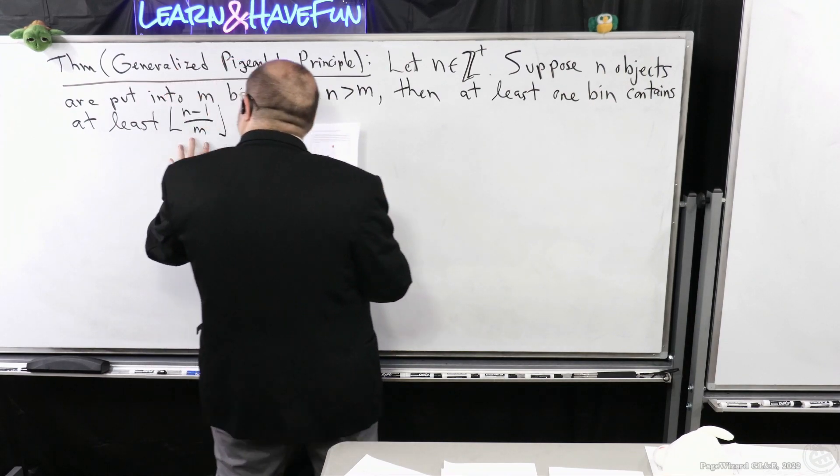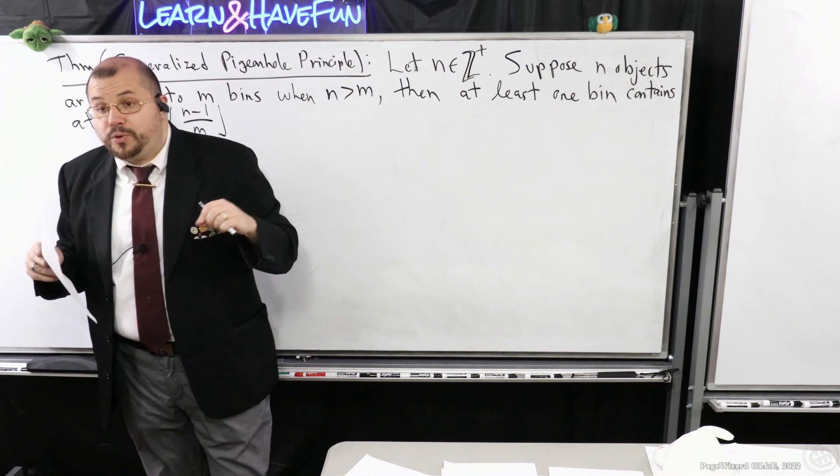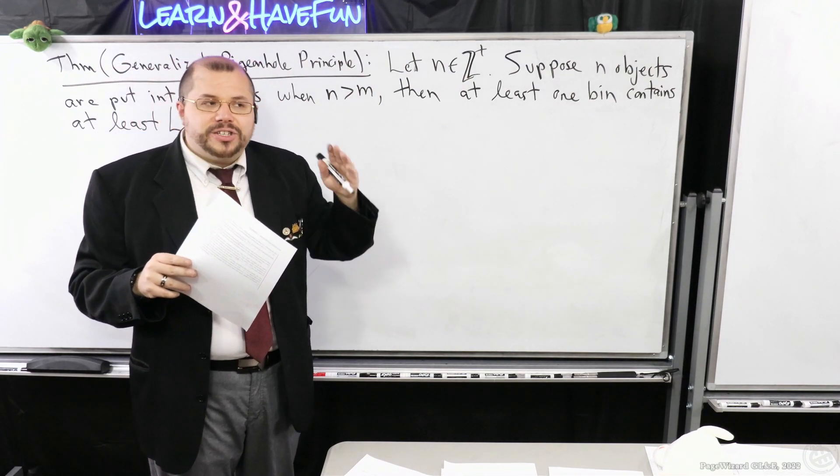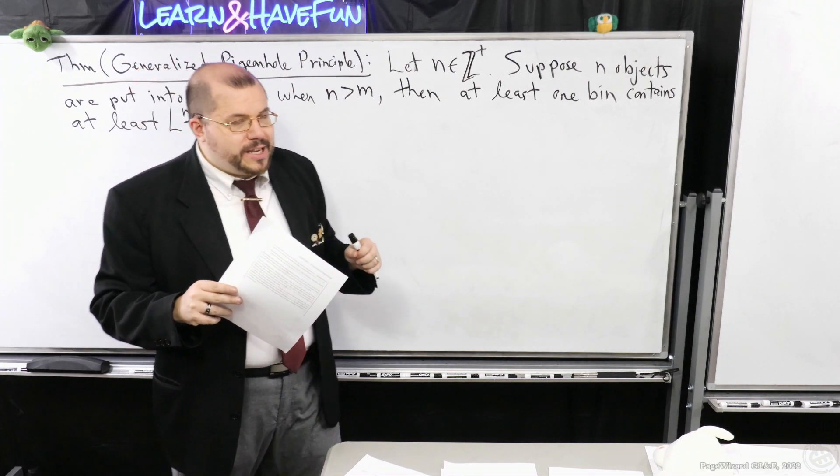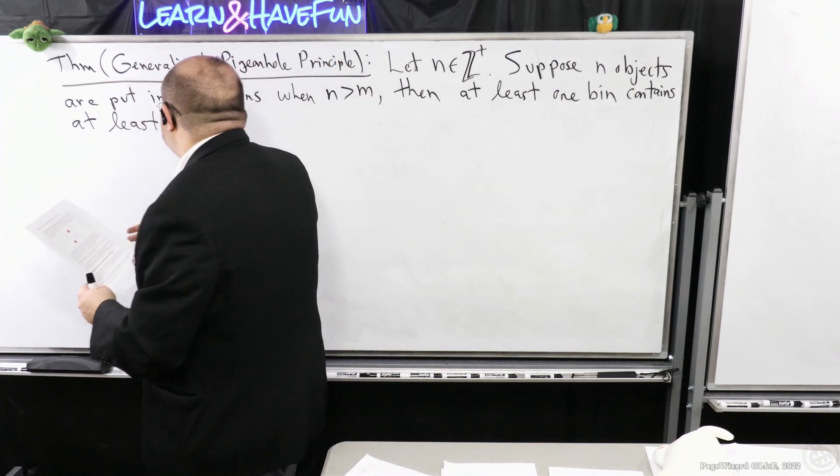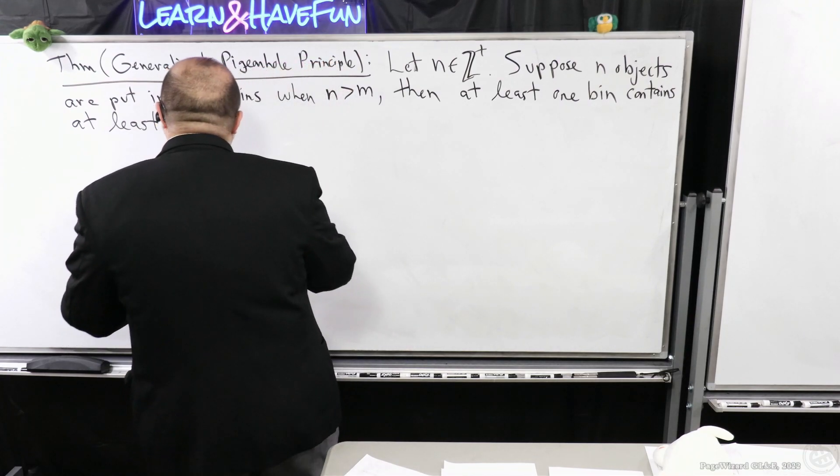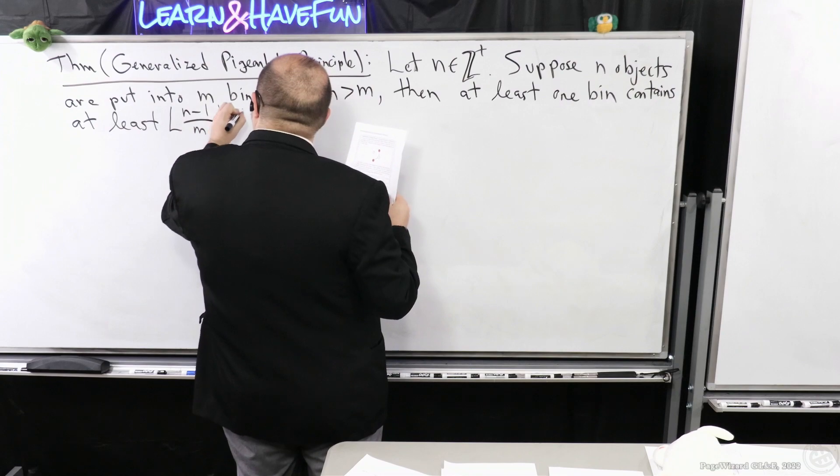This is stripping away the fractional part. So for example if I have a number like 2.5, the floor of 2.5 is 2. You just strip off the fractional part, you just keep the integer part. So that's what this symbol here, the floor function, is at least this.